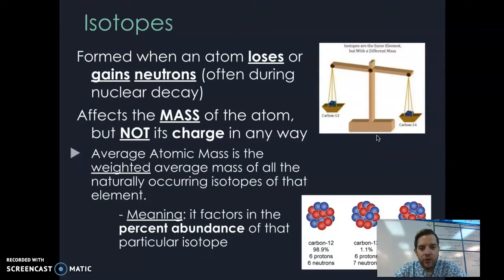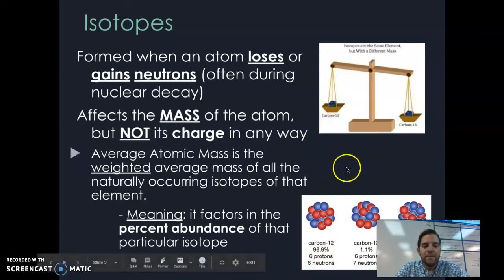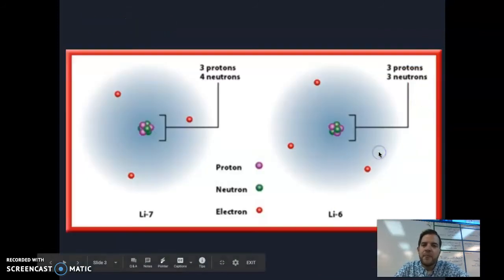Isotopes are when we've gained or lost neutrons, which changes the mass of an atom but not its charge. When different types of an element exist in the universe, the average mass on the periodic table must be weighted based on the abundance of each isotope. The difference is really just a neutron. We can identify isotopes as Li-7, Li-6 for lithium, or we can use the isotopic symbol.